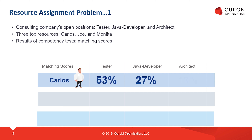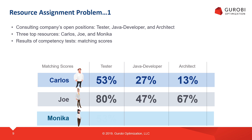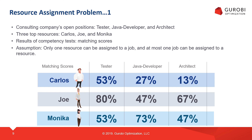Hello everybody, welcome back. In this video we are going to discuss a problem called the Resource Assignment Problem, and we are going to use this problem throughout the whole series. Consider a consulting company that has three open positions: one as a tester, another as a Java developer, and another as an architect. The three top resources to perform any of these jobs are Carlos, Joe, and Monica.